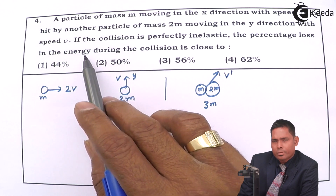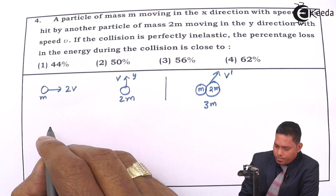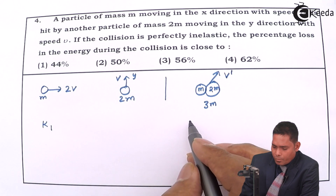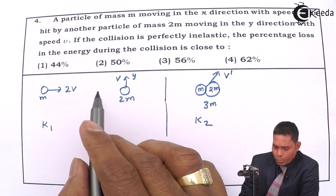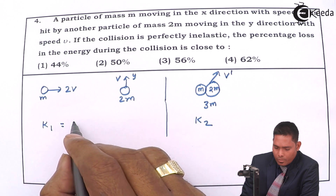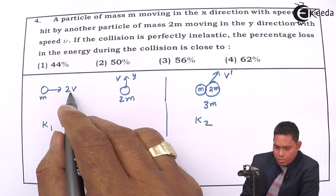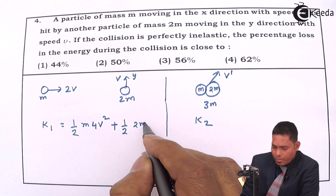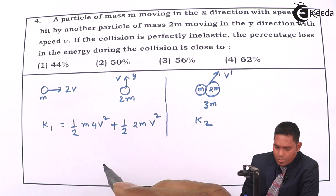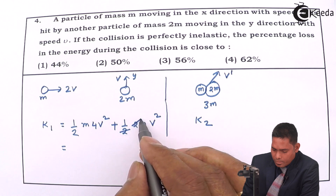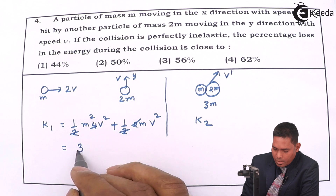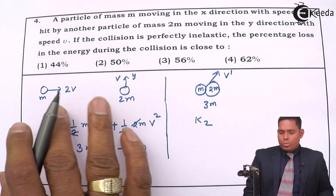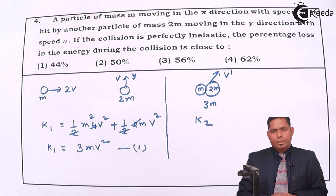First we find the initial kinetic energy K1 of the system before collision. K1 = ½ × m × (2v)² + ½ × 2m × v² = ½ × m × 4v² + ½ × 2m × v² = 2mv² + mv² = 3mv². So the total initial kinetic energy is 3mv². This is equation one.